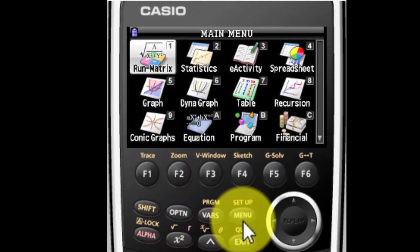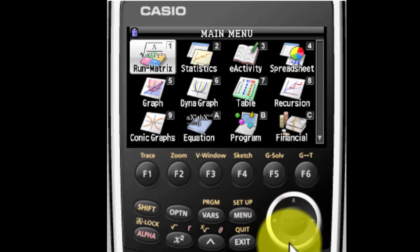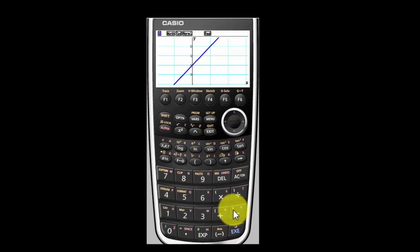If you don't see this screen, go ahead and hit your menu button right here. That should change it so that you do see this screen. We're going to do some graphing, so we're going to find the word graph. For me, it's number 5. For you, it might be something different. And hit Execute.